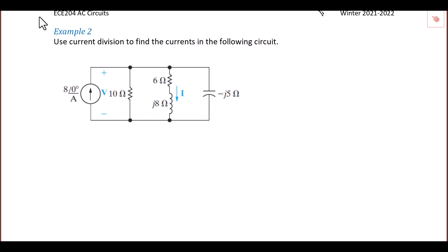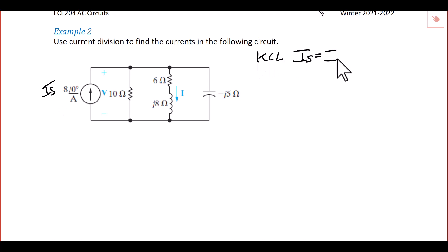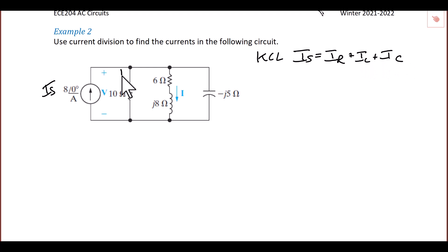Example 2: use current division to find the current in the following circuit. We have a source current of 8 at an angle of 0 degrees in parallel with 10 ohms, in parallel with 6 plus J8 ohms, in parallel with negative J5 ohms. We label our source Is and write the KCL equation: Is equals Ir plus Il plus Ic, the currents through the resistor, inductor, and capacitor respectively.